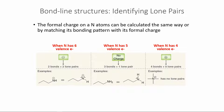We can do a similar exercise with nitrogen, which is in group five. Negative nitrogen has six valence electrons: two bonds and two lone pairs. Neutral nitrogen has five valence electrons: three bonds and one lone pair. Positive nitrogen has one less electron than its valence, giving four bonds and zero lone pairs.